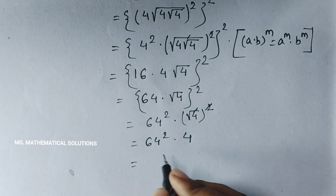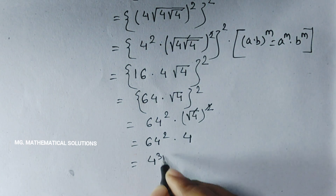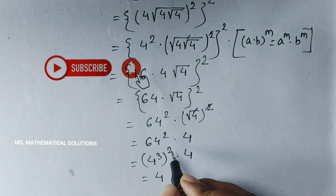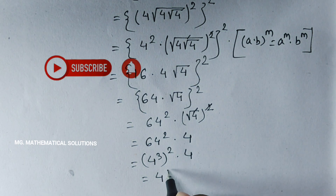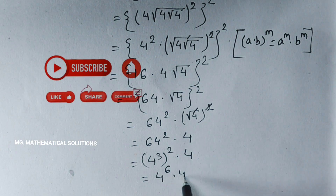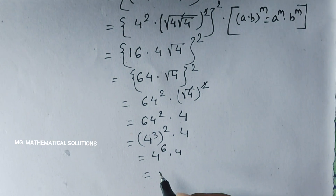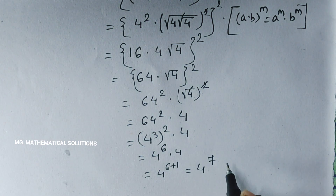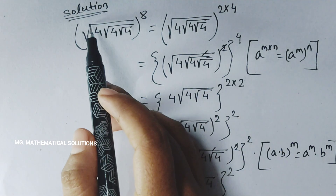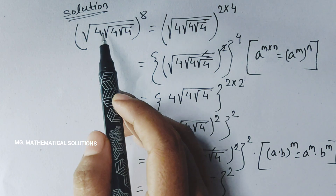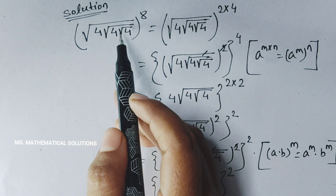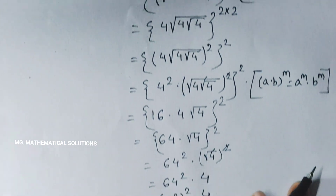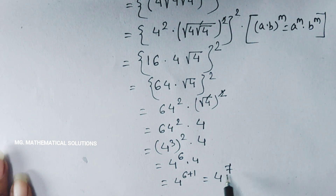64 means 4 cubed, squared, into 4. This means 4 to the power 6 into 4. So equal to 4 to the power 6 plus 1, equal to 4 to the power 7. So root under 4, root under 4, root under 4, whole to the power 8 equals 4 to the power 7.